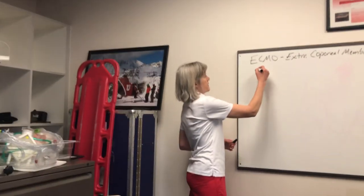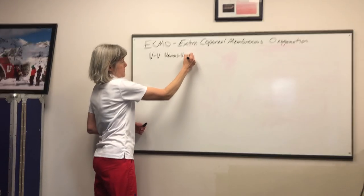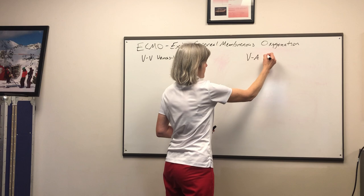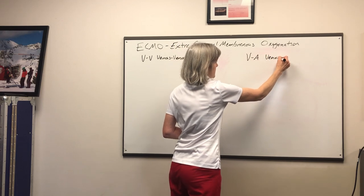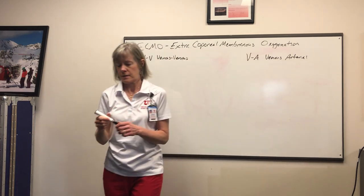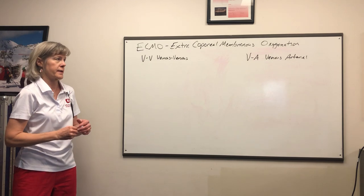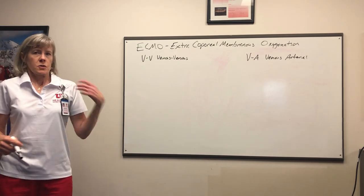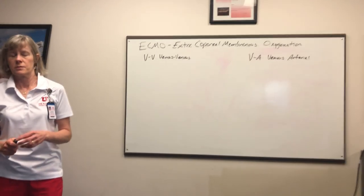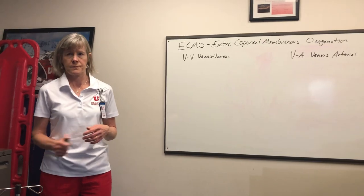There are two types of ECMO. VV is venous-venous and VA is venous-arterial. It is VA - venous-arterial - because the blood comes out of the venous and back into the artery; it's not AV. I'm going to talk about VV ECMO first because it's a little bit easier to understand, and then we'll build on that for VA.